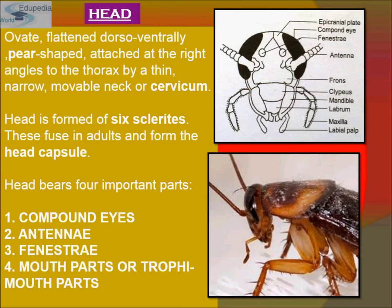The head is oblong, dorso-ventrally flattened, and pear-shaped, attached at right angles to the thorax by a thin, narrow, movable neck also known as the cervicum. Head and thorax are connected by this flexible, movable neck. The head is formed of six sclerites which fuse in adults to form the head capsule.